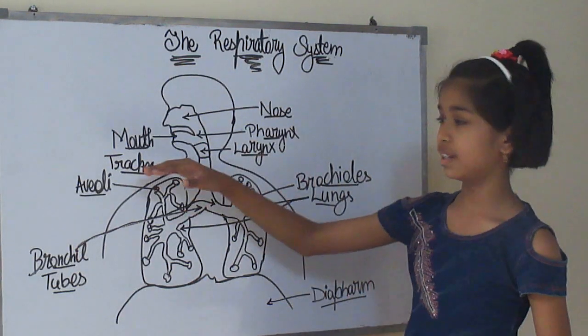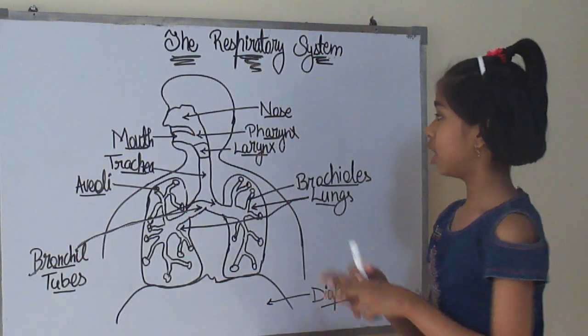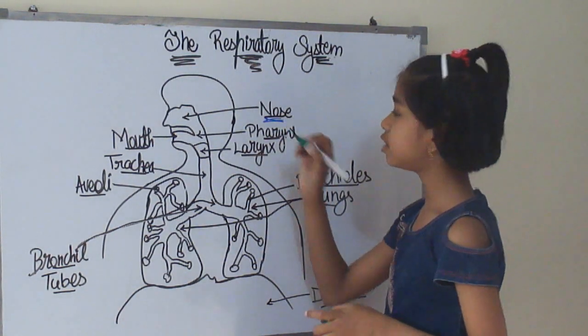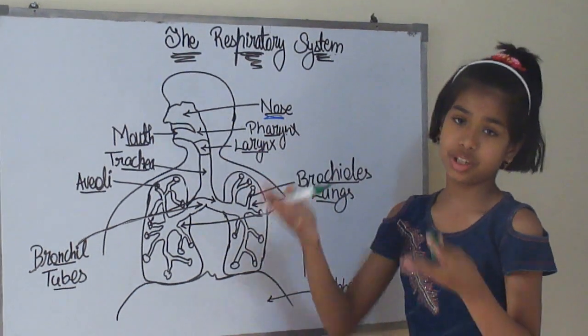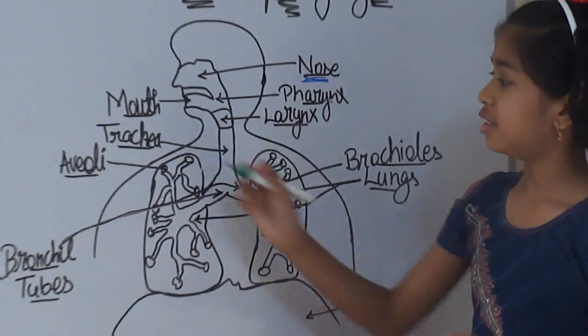Firstly, here is the nose. You know about the nose. What is the nose? Here is the mouth. You can see here.